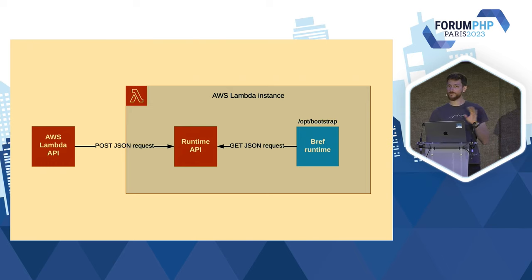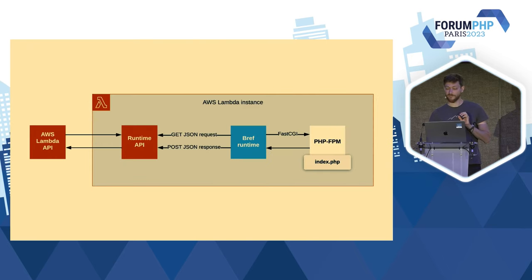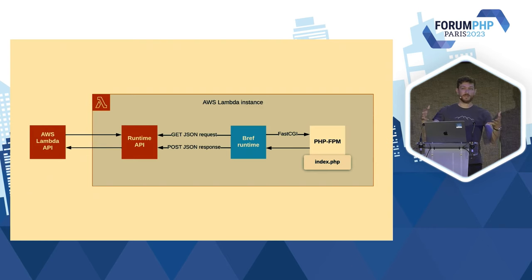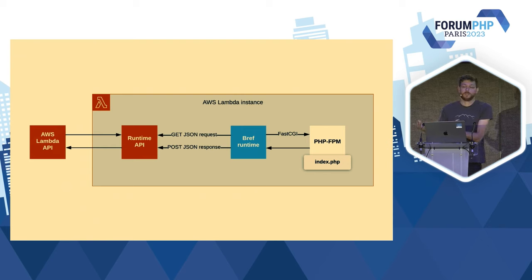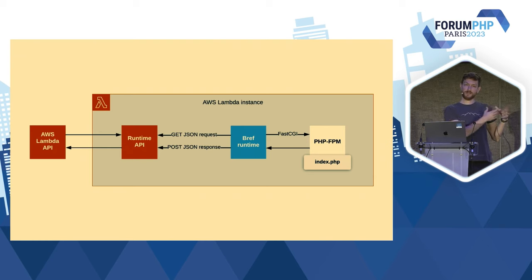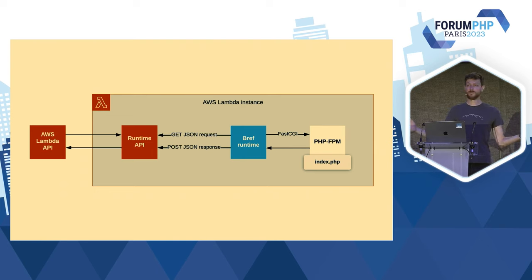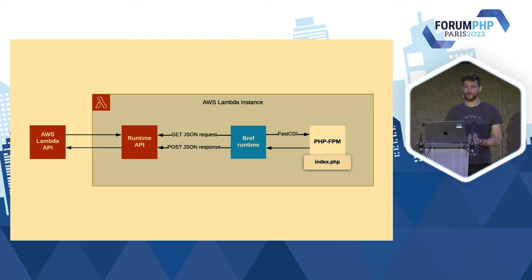Une fois que Bref a récupéré le JSON, que fait Bref ? Il vient démarrer PHP-FPM. PHP-FPM, c'est le binaire officiel distribué par PHP qui tourne peut-être sur la majorité de vos serveurs. On utilise généralement Apache ou Nginx qui reçoit les requêtes HTTP et ensuite PHP-FPM pour faire tourner notre code — et bien c'est exactement ce qui tourne dans Lambda. Et donc Bref convertit le JSON un peu bizarre au format normal Fast CGI, c'est le protocole que parle PHP-FPM. Notre code, Symfony, Laravel ou n'importe quoi, tourne dans le même environnement et les mêmes contextes que sur n'importe quel autre serveur. Dollar get, dollar post, les headers, les sessions, toutes ces choses-là, c'est pareil.